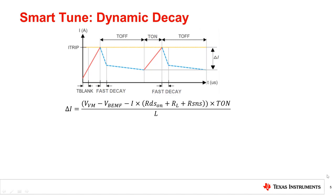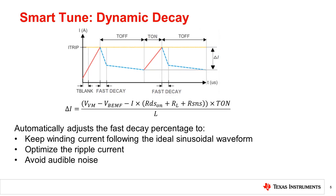There are two different SmartTune algorithms which can be used: dynamic decay and ripple control decay. SmartTune dynamic decay greatly simplifies decay mode selection by automatically configuring the decay mode between slow, mixed, and fast decay. In mixed decay, SmartTune automatically adjusts the fast decay percentage of the total mixed decay time. This feature eliminates motor tuning by automatically determining the best decay setting that results in lower ripple for the motor, and the decay mode setting is optimized each PWM cycle so any change in motor conditions will be adjusted for.